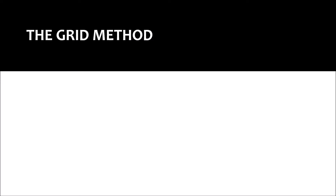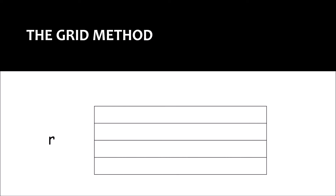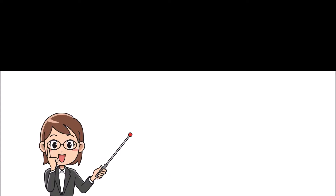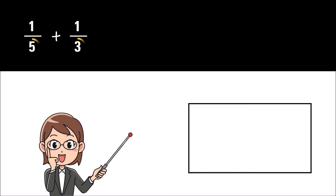The grid method is applicable only for two fractions at a time. This method uses rows and columns to represent the denominators. The combination of the rows and columns will represent the new denominator, and the sum of the numerators will be the new numerator. Let us add the fractions one-fifth and one-third. The denominators are five and three.